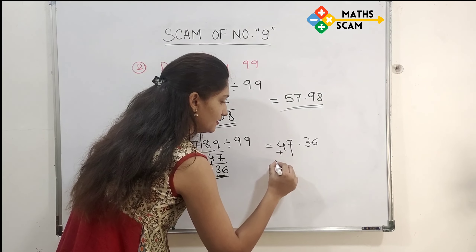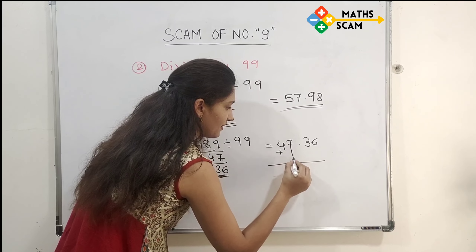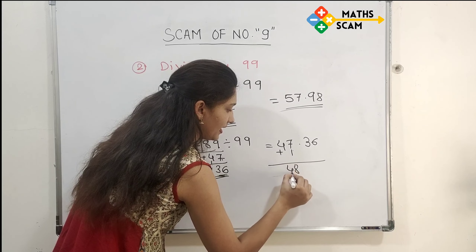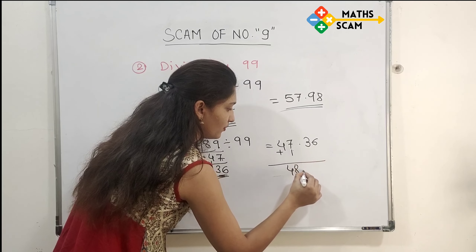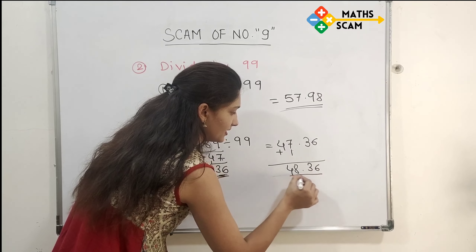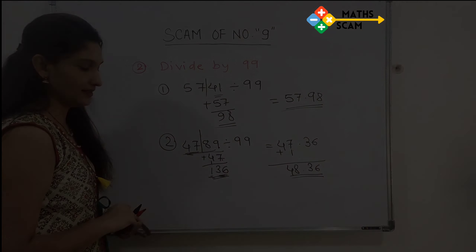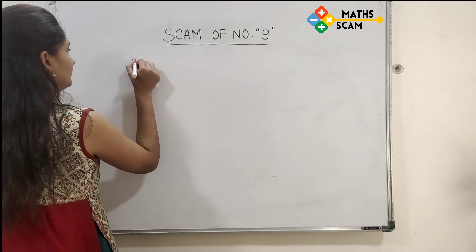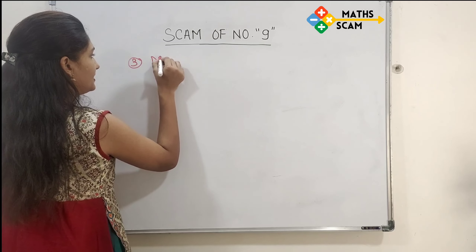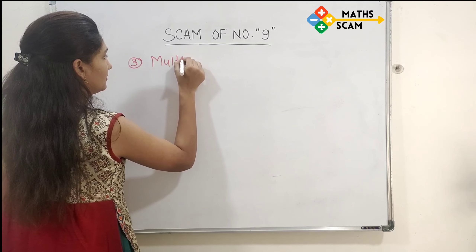So the result is 136. Write 36 after the decimal point and carry 1. That 1 is added into 47, so 7 plus 1 is 8, giving 48. The final answer is 48.36.